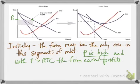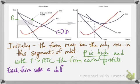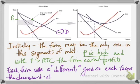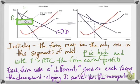So price is high and with price higher than average total cost they are generating positive economic profits. Each firm sells a different good or slightly differentiated good so each one faces that downward sloping demand curve like the monopoly.